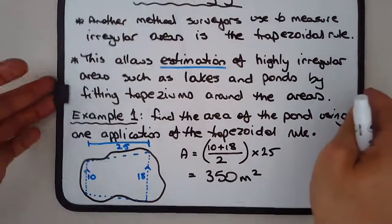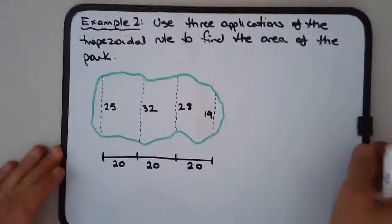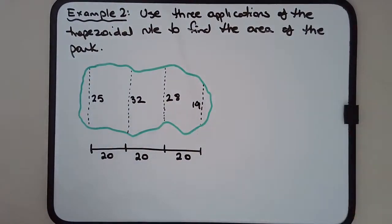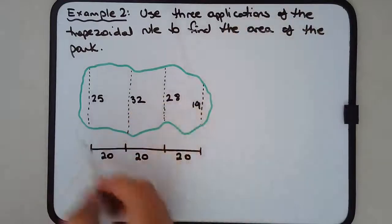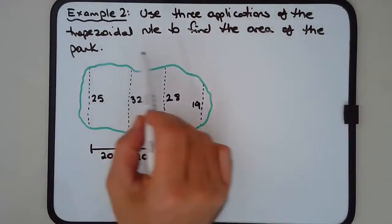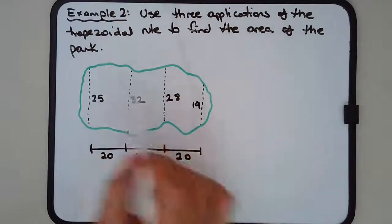Let's have a look at a more involved example which uses multiple trapeziums. Example number two: we're going to estimate the area of this park. We'll use three applications of the trapezoidal rule to find the area of the park.